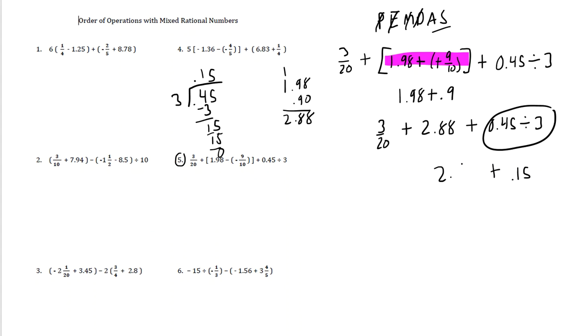So now we have 2.88. We have 0.15. And then we have a 3/20. So let's go ahead and change this one fraction we have into a decimal since the other two are already decimals. 20 fits into 30 once. So that one would be 0.15.